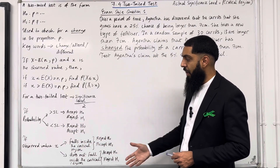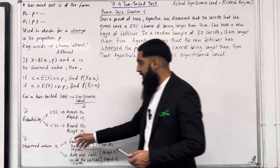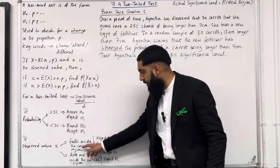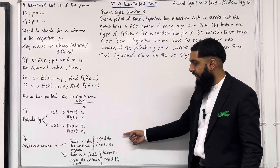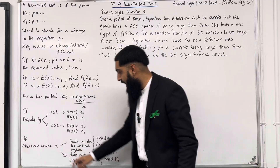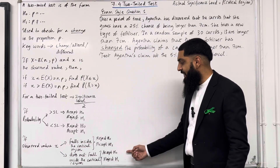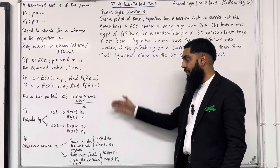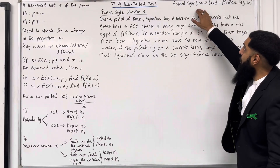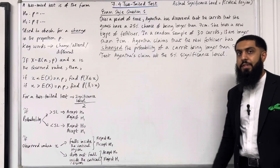In another scenario: if the observed value lowercase x falls inside the critical region, then we reject H0 and accept H1. If the observed value does not fall inside the critical region, we accept H0 and reject H1. The actual significance level is given by the probability of the critical region.